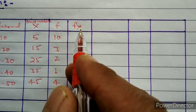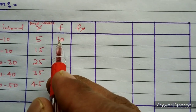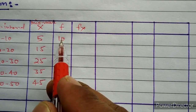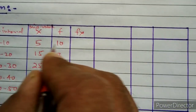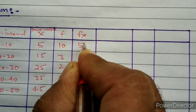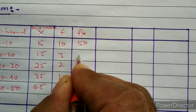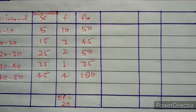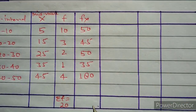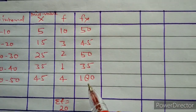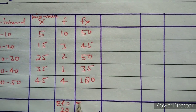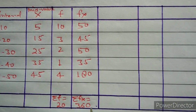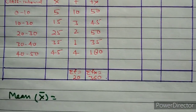In the next column we will write the caption fx, because we need fx for the calculation of the mean. We will calculate fx by multiplying the mid value by its corresponding frequency. For example, 5 into 10 gives 50, then 15 into 3 gives 45, and likewise we will calculate fx for each value. Finally we sum all these values to get sigma fx, which equals 360.